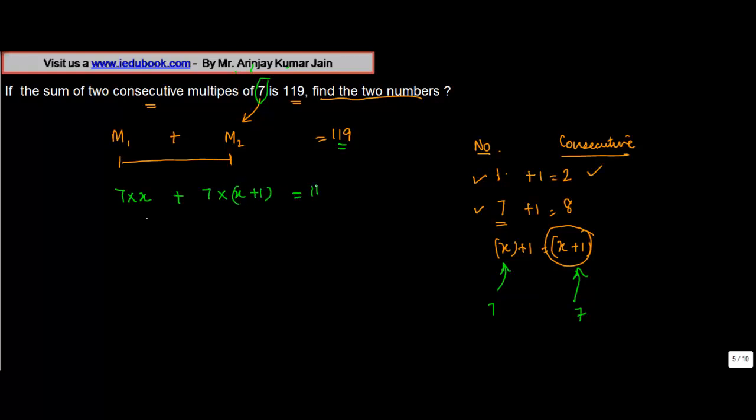This equals 119. So the numbers are basically x and x+1. 7x plus 7(x+1) gives you 7x plus 7 equals 119, or 14x equals 119 minus 7.